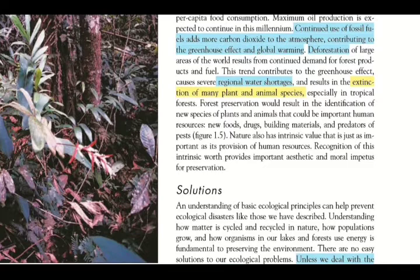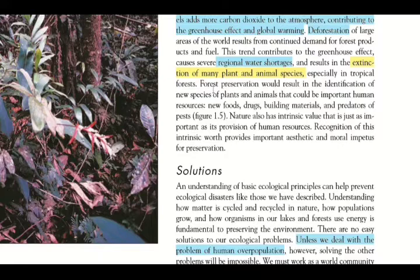By cutting too many plants and trees for food production and fuel, we are ultimately harming animals and plants. Deforestation plays a major role in this. Forest preservation would result in the identification of new species of plants and animals, which could be very important to humans — for example, allowing us to discover new foods, drugs, building materials, and predators of pests.